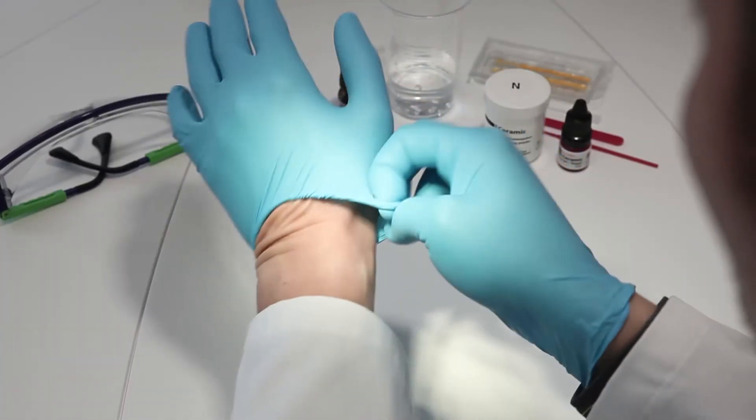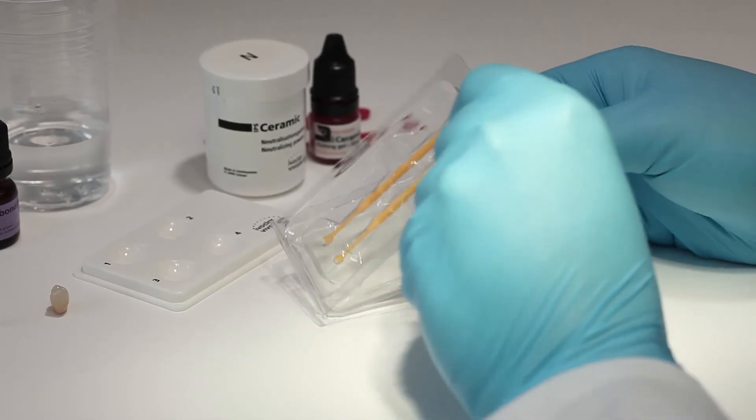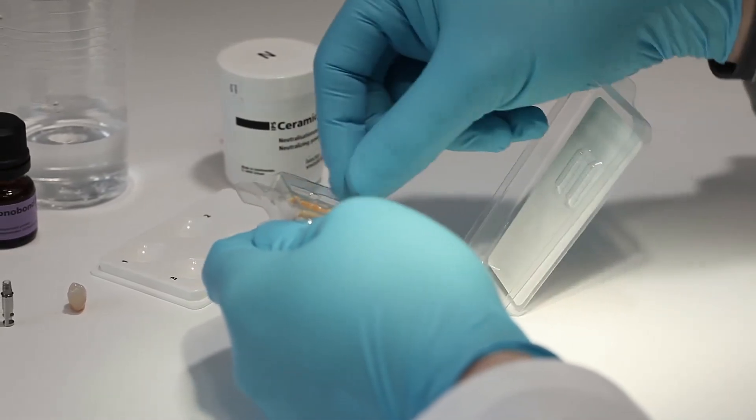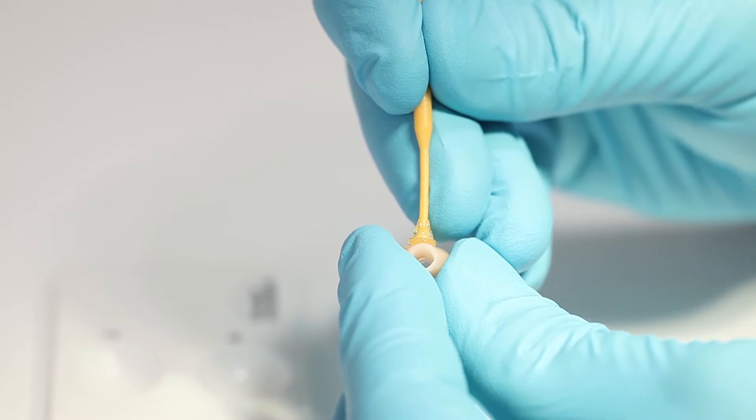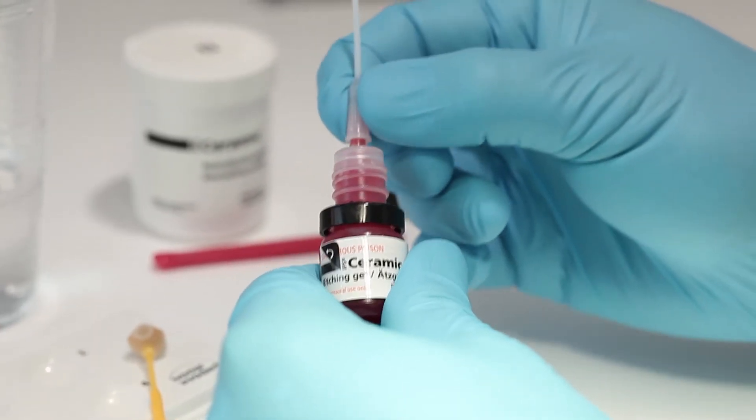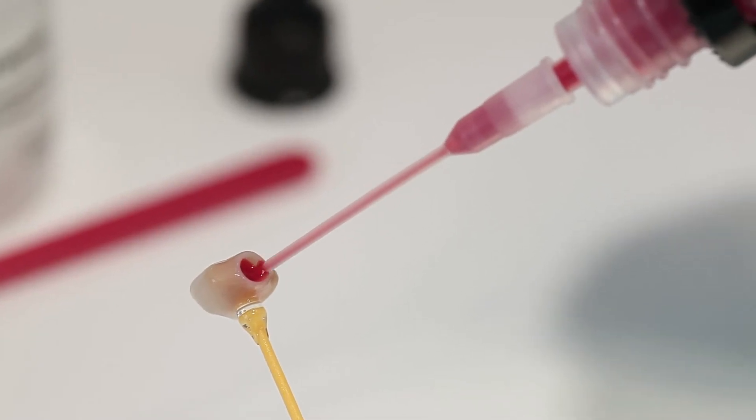The IPS-EMACS CAD ceramic structure must also be conditioned before cementation. Under no circumstances should the ceramic structure be sandblasted. Apply IPS ceramic etching gel to condition the bonding surface and allow to react for 20 seconds.